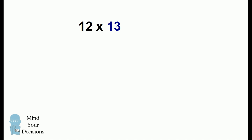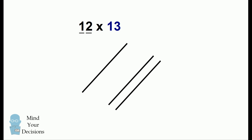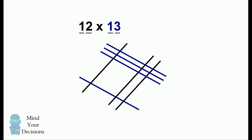Let's say you want to multiply 12 by 13. For the 1 in 12, we'll draw one line. For the 2, we'll leave a little bit of space and draw two lines. For the other number, we'll draw lines in the other direction. Now we will group up intersections of the lines. On the far right, there are six intersections.